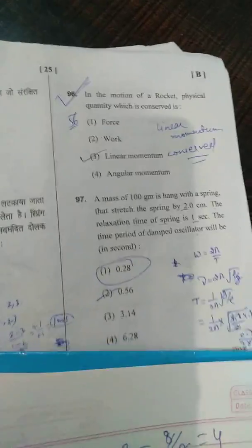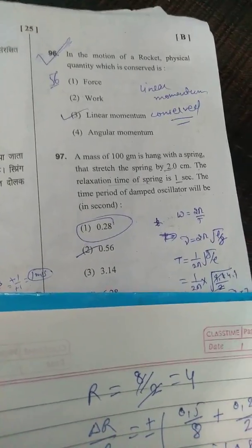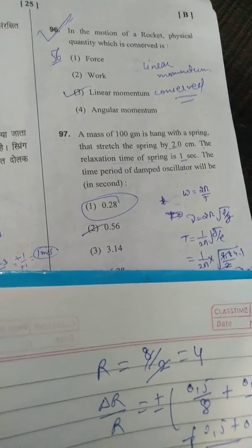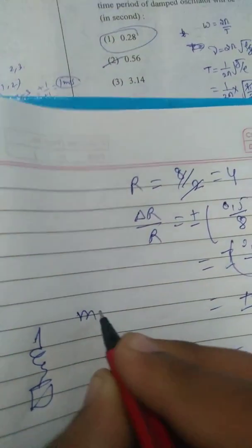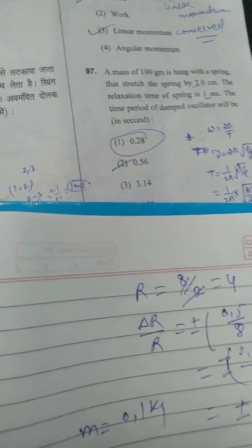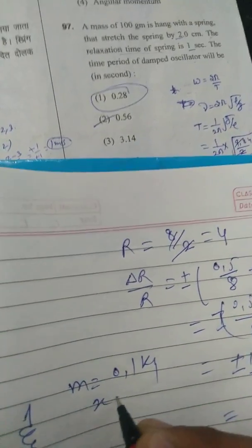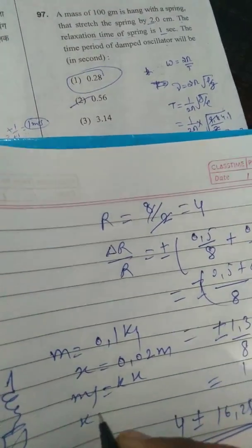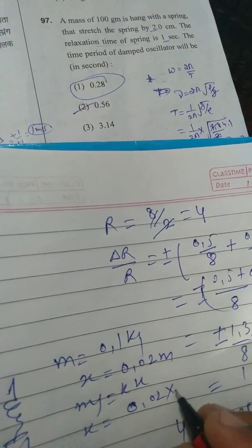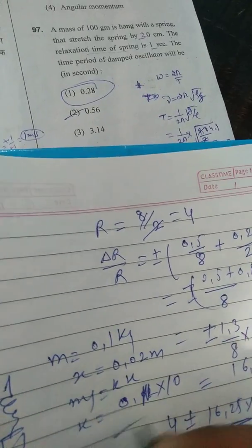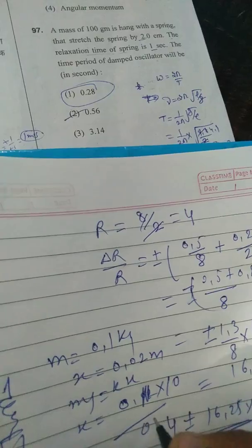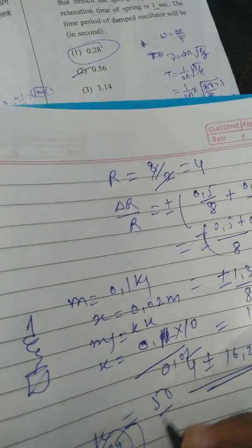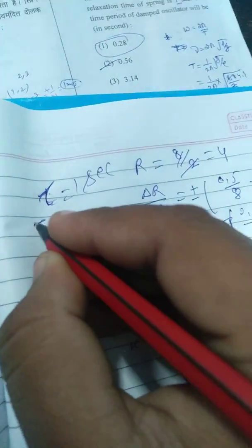Question 96: In the motion of a rocket, the physical quantity that is constant is linear momentum. Option 3 is correct. Question 97: A mass of 100 grams is hung with a spring, stretching it by 2 centimeters, so x = 0.02 m. Applying mg = kx: k = (0.1 × 10) / 0.02 = 50 N/m. The relaxation time is 1 second, so the decay constant γ = 1/(2 × relaxation time) = 0.5 s⁻¹.